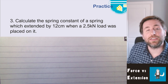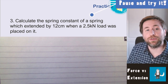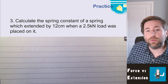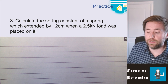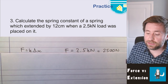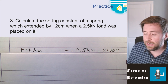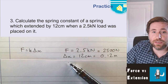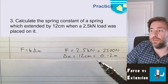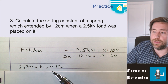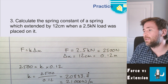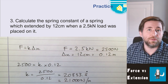The last one requires both rearranging and unit conversions: calculate the spring constant of a spring extended by 12 centimetres when a 2.5 kilonewton load is placed on it. Write F = kΔx, convert: F = 2500 N, extension = 0.12 m. Substitute and rearrange for k: k = 2500 ÷ 0.12, which gives approximately 20,800 N/m to two significant figures.